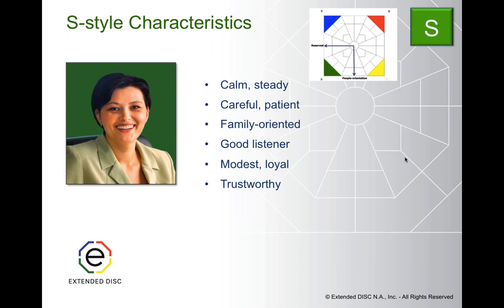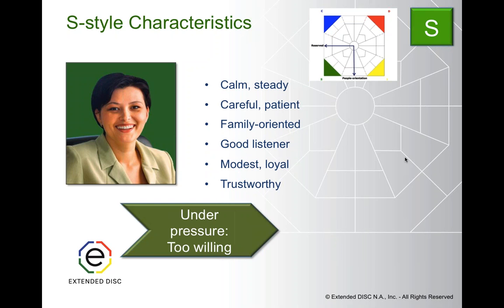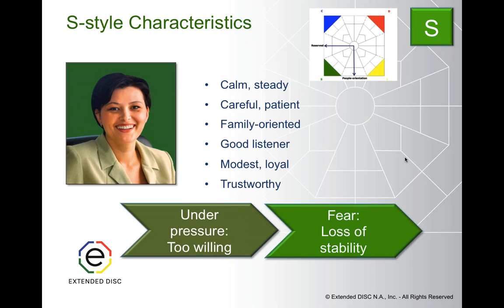S's are in the bottom left-hand quadrant of the DISC diamond, right between reserved and people-oriented. Some attributes of an S style include calm and steady, careful and patient. They're really your team players, and they're very trustworthy, good listeners. Under pressure, though, S styles can be seen as too willing or overly accommodating to people's requests. S styles fear loss of stability and don't really like change or surprises. Their motto is: if it's not broken, let's not fix it.